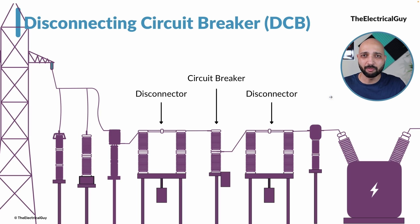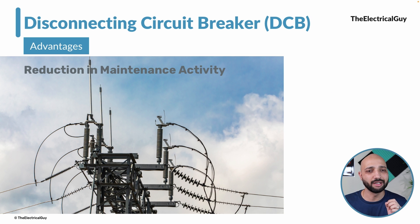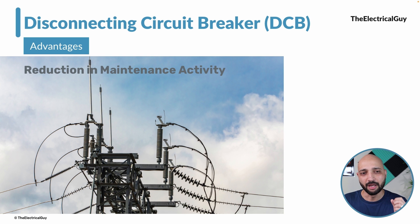The first and most important advantage is reduction in maintenance activity. When compared with a regular air-insulated disconnector, which needs maintenance every two to six years depending on user practice and atmospheric conditions, the disconnecting circuit breaker performs the disconnecting function inside the SF6-insulated chamber. So just like the circuit breaker, the DCB will not need any maintenance for 15 to 20 years — a significant reduction in maintenance activity.